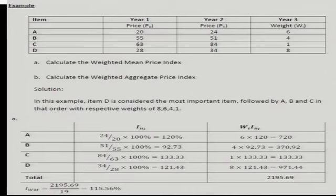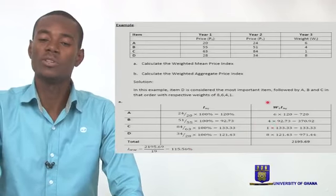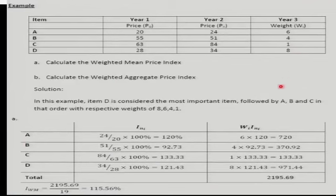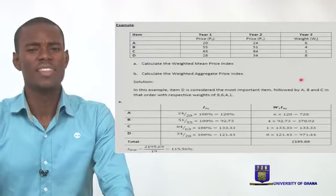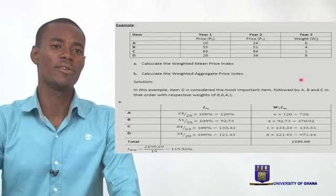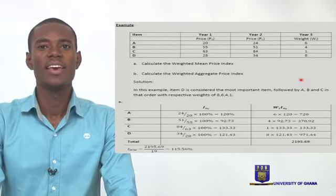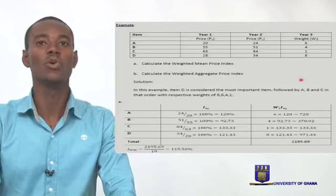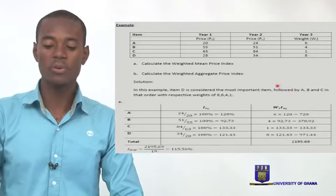This index is more reliable because it accounts for differences in the level of importance we attach to each product — we don't just assume they are all equally important. The weights make that clear. For a typical provision shop, some products sell very fast while others may sit for months. It would be unfair to assume they are equally important, and this weighted approach accounts for that.